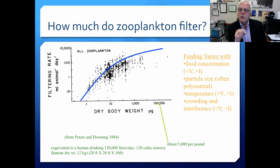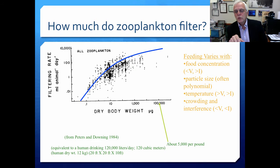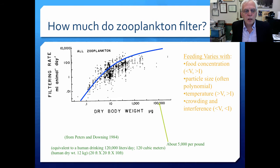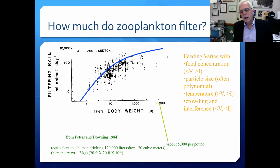The feeding rate varies with food concentration — the more food there is in the environment, usually the lower the volume of water cleared per unit time, but the ingestion rate tends to increase with food concentration. It often varies also with particle size in a polynomial kind of way, so there's some kind of optimal food particle size. It also increases with temperature because these are poikilotherms that react very rapidly to temperature. The volumetric feeding rate and the ingestion rate also varies with crowding — if they tend to be very crowded or interfered with by other organisms, it tends to drive their filtering rate and ingestion rate down.